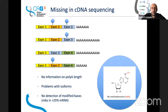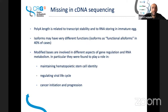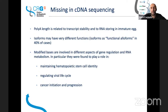This can be important because poly-A length is related to transcript stability — if you have this information, you can know which transcript is stable for longer. About isoforms, that's important because some isoforms have a completely different function from others. You may have different isoforms performing different functions, and if you can't reconstruct which isoform is most highly expressed, you will get in trouble. These are sometimes called alloforms.